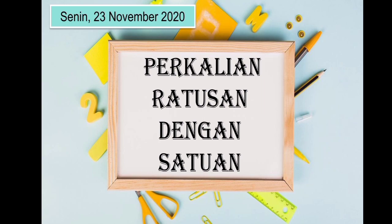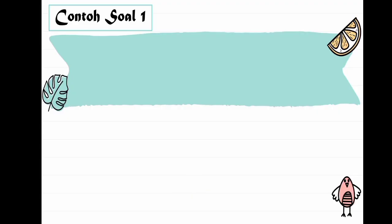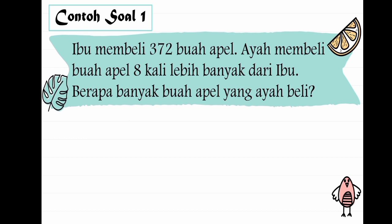Perkalian ratusan dengan satuan. Contoh soal pertama: Ibu membeli 372 buah apel. Ayah membeli buah apel 8 kali lebih banyak dari ibu. Yang ditanya: berapa banyak buah apel yang ayah beli? Berarti caranya dikali ya teman-teman.